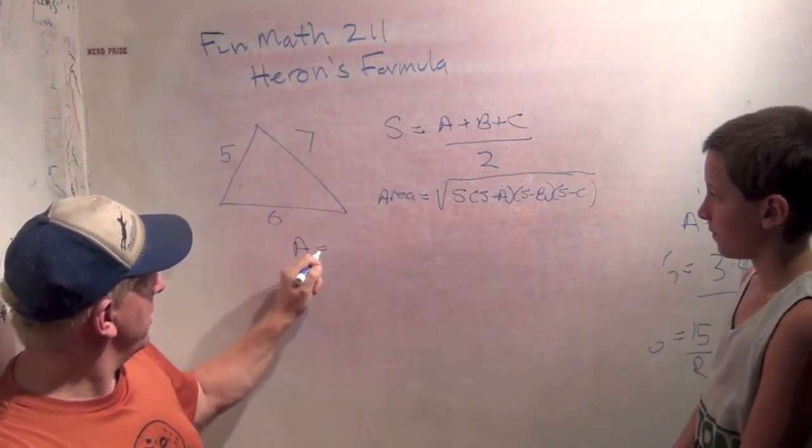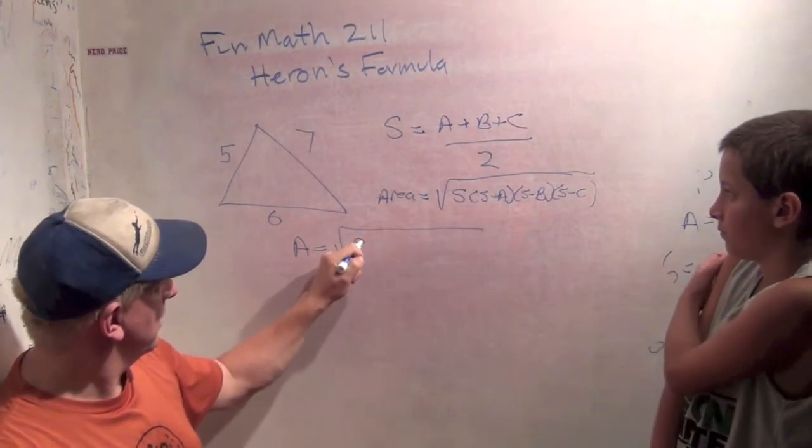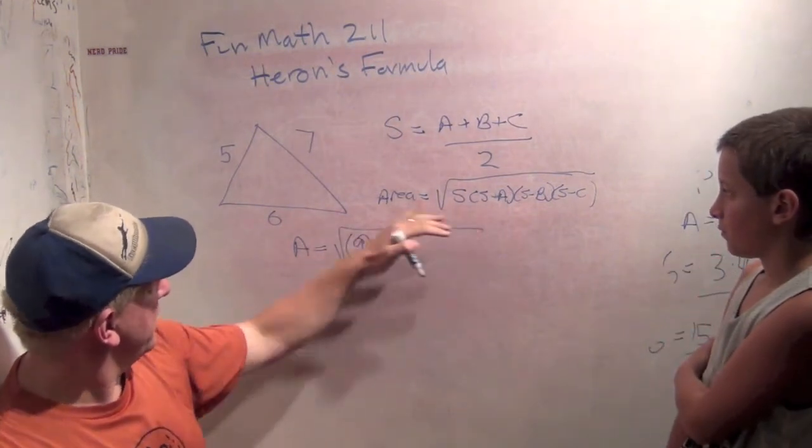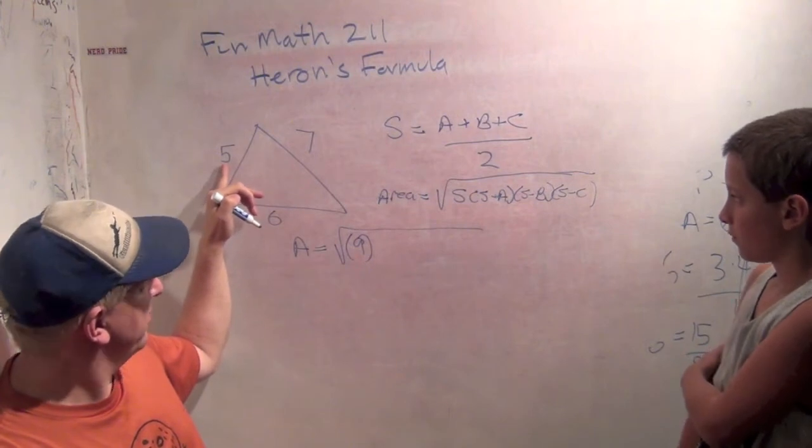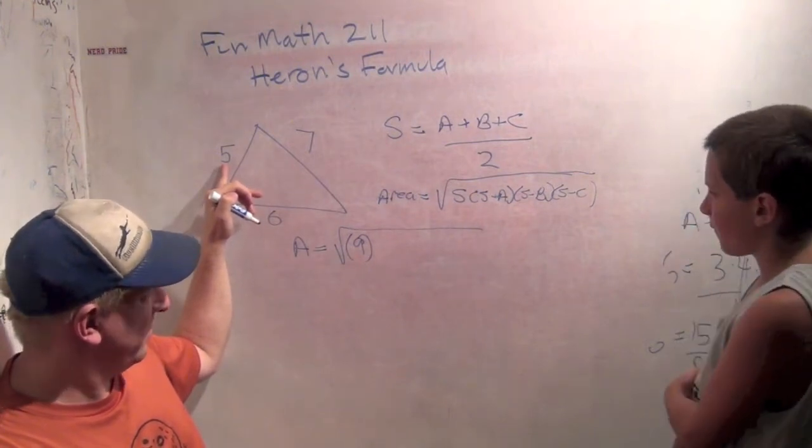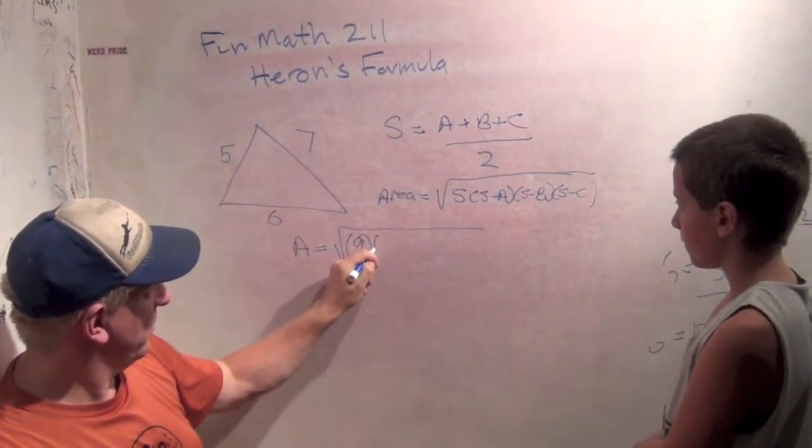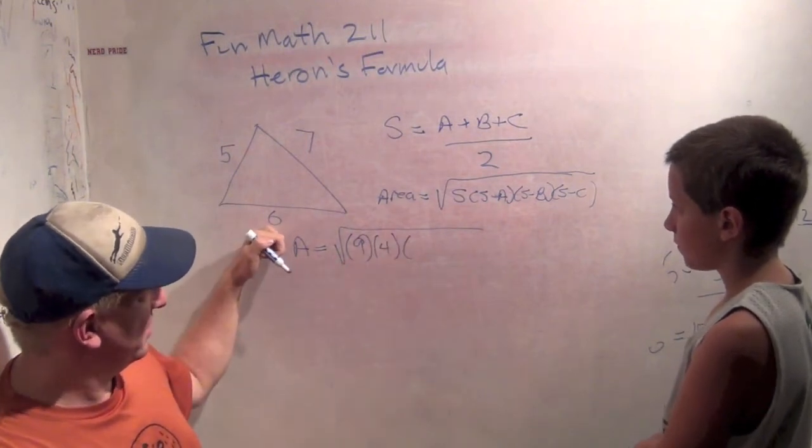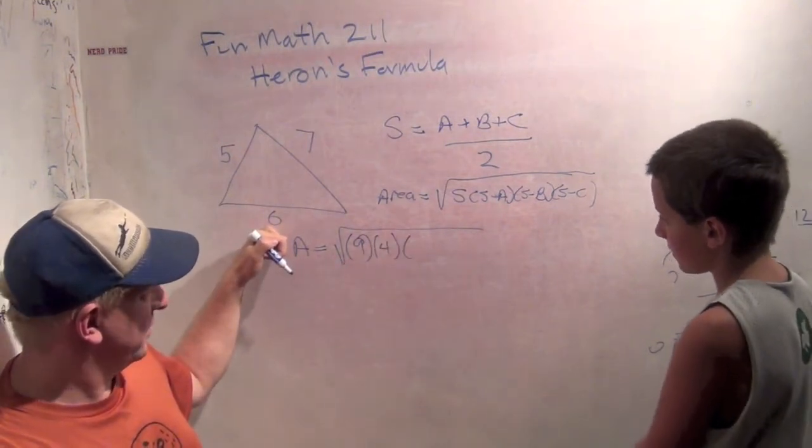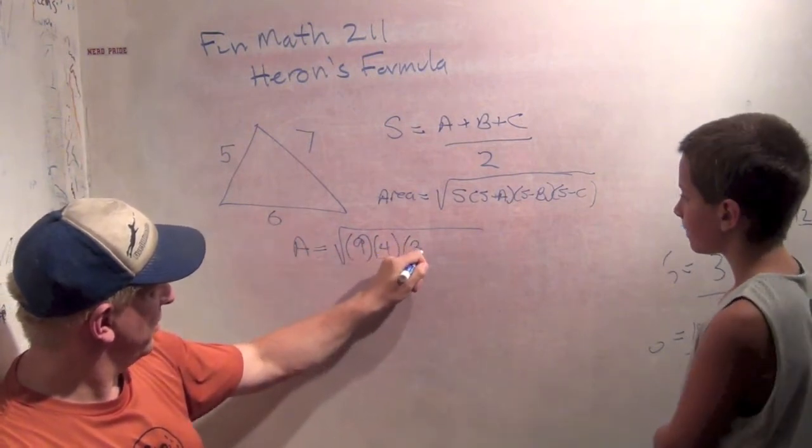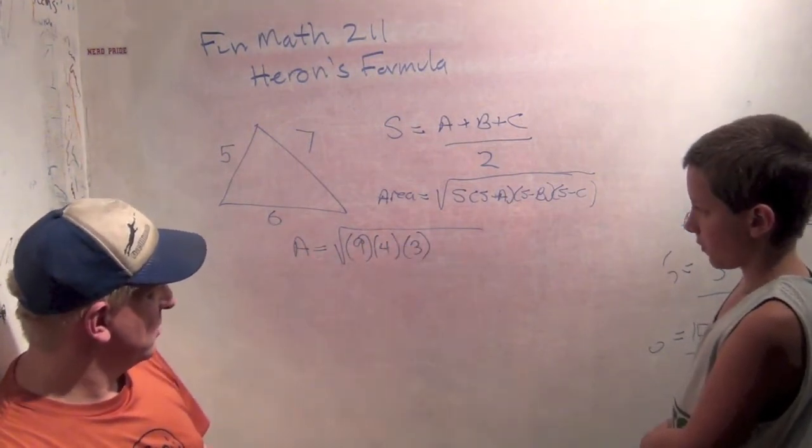So the area is the square root of 9 times... 9 minus A, what's 9 minus 5? It's 4. What's 9 minus 6? It's 3. What's 9 minus 7? It's 2.